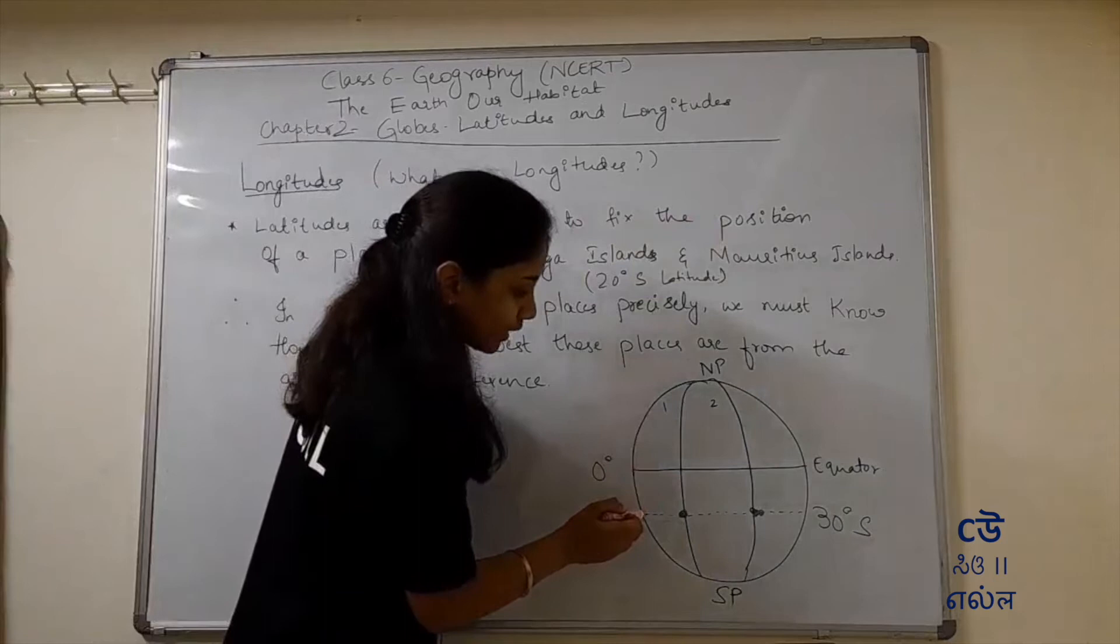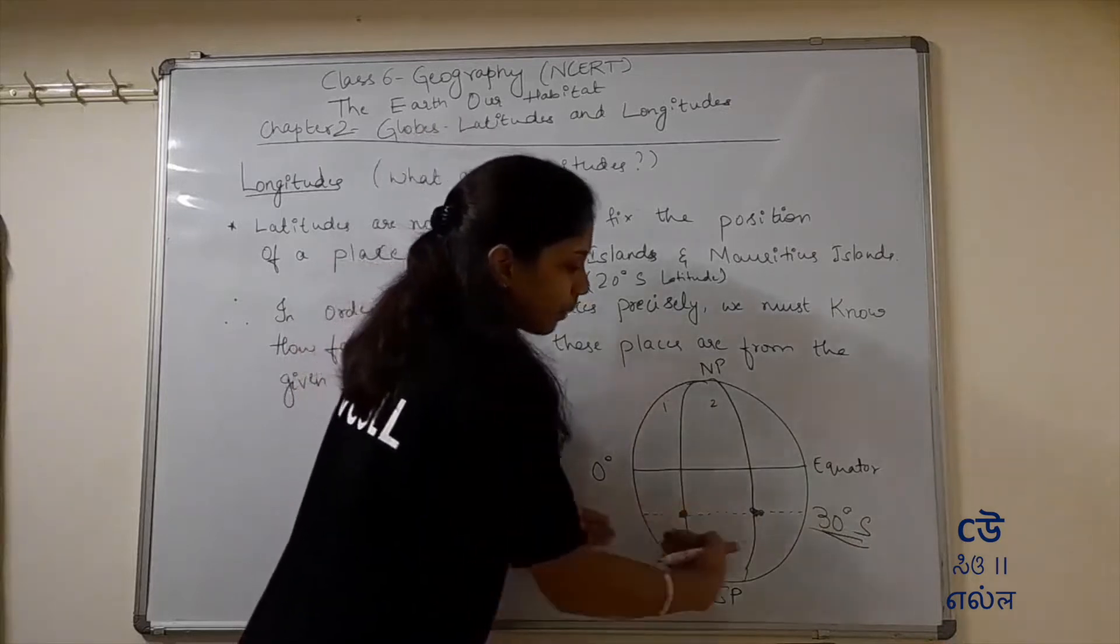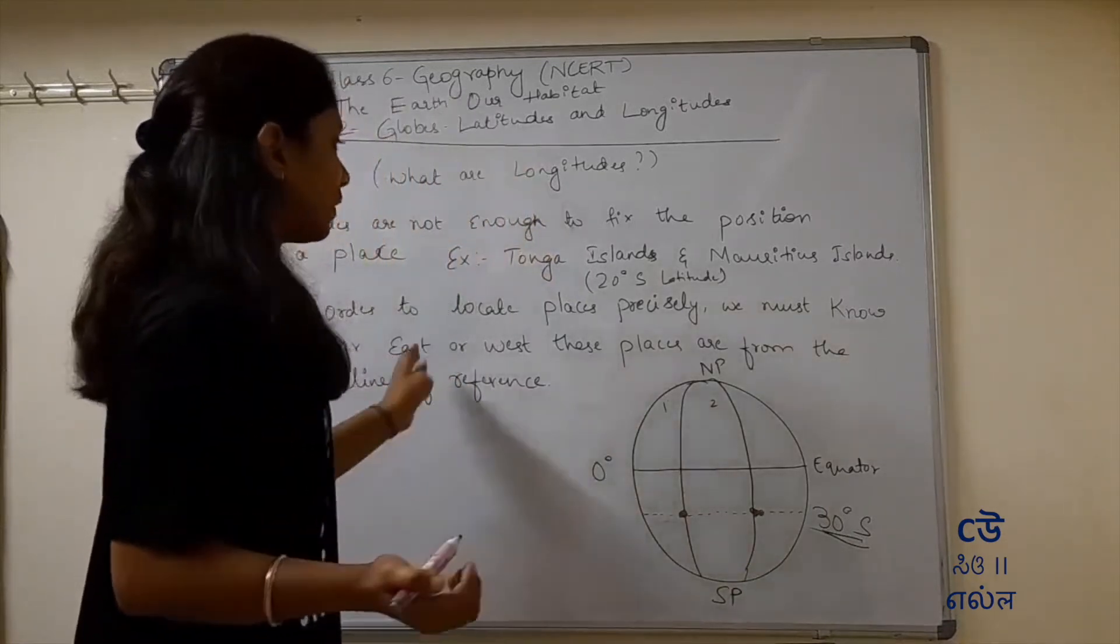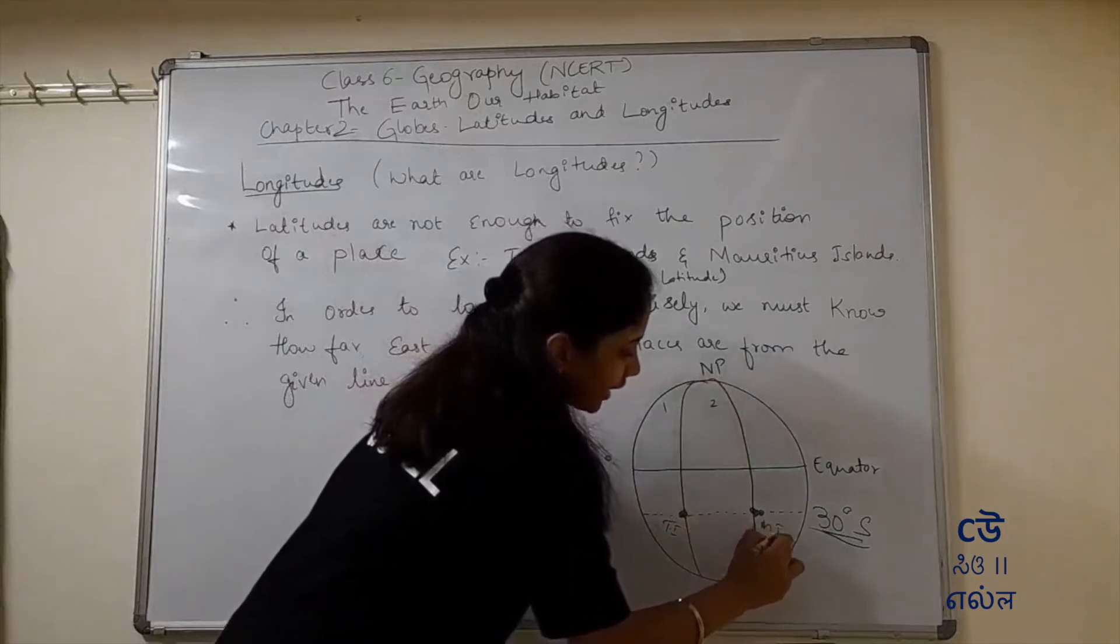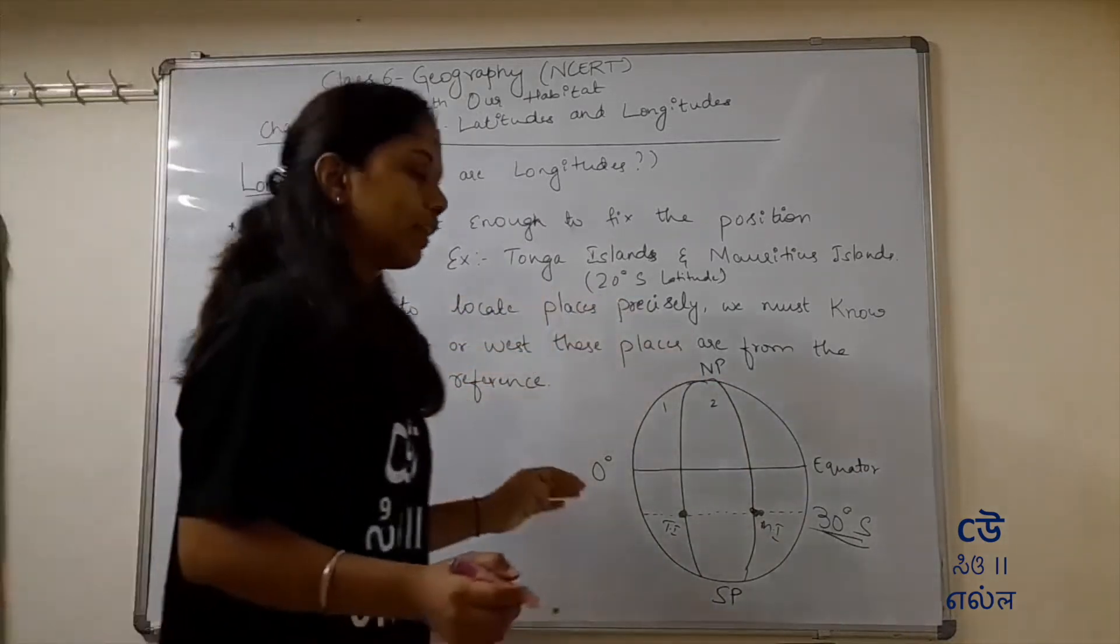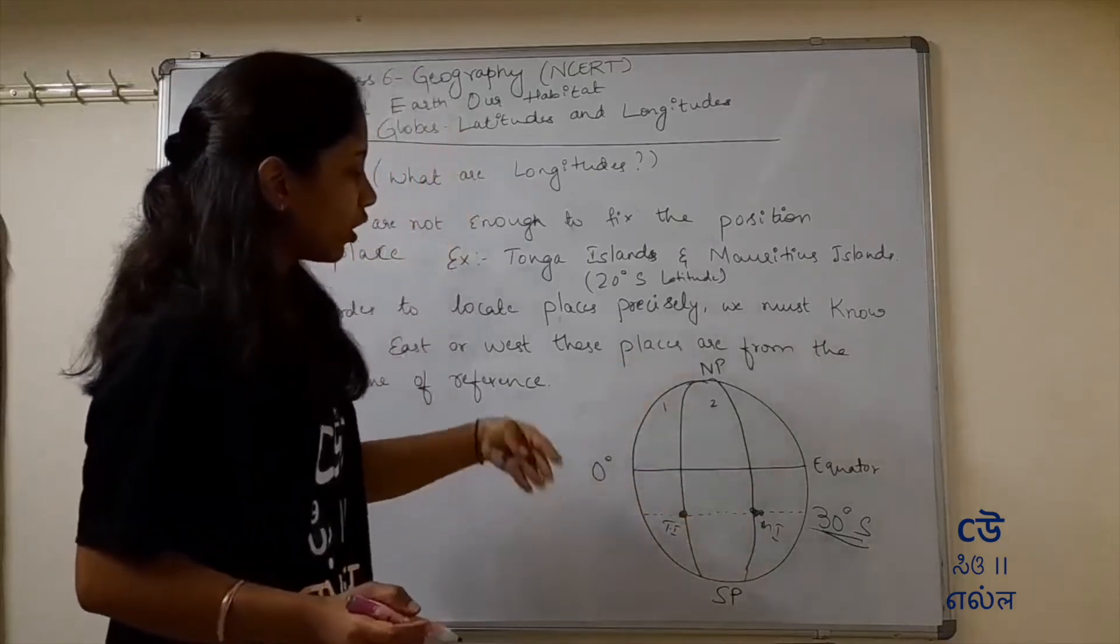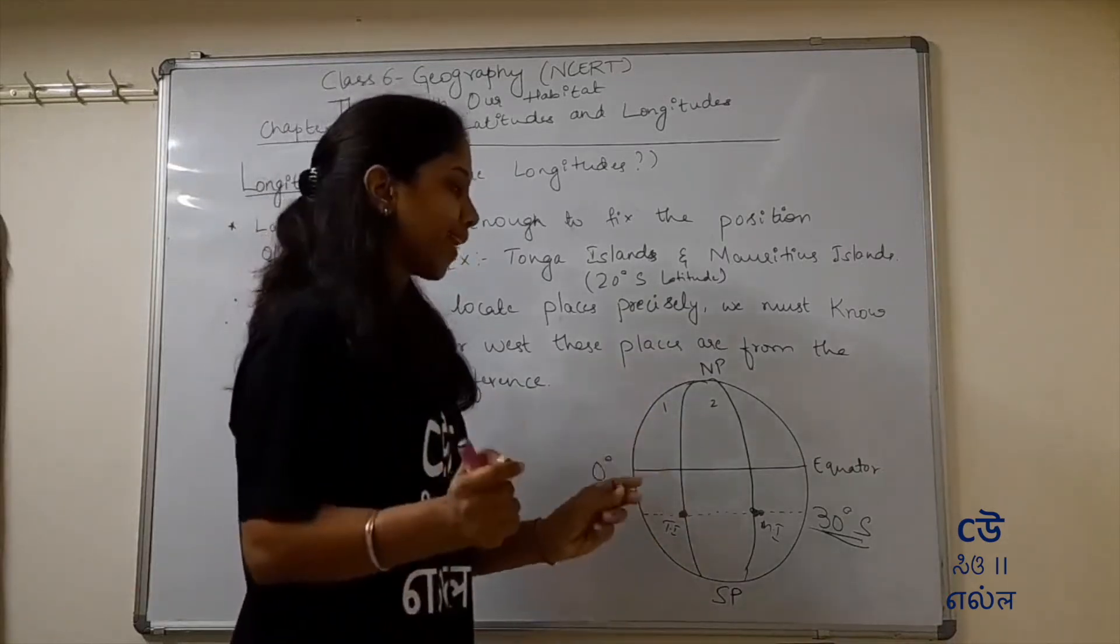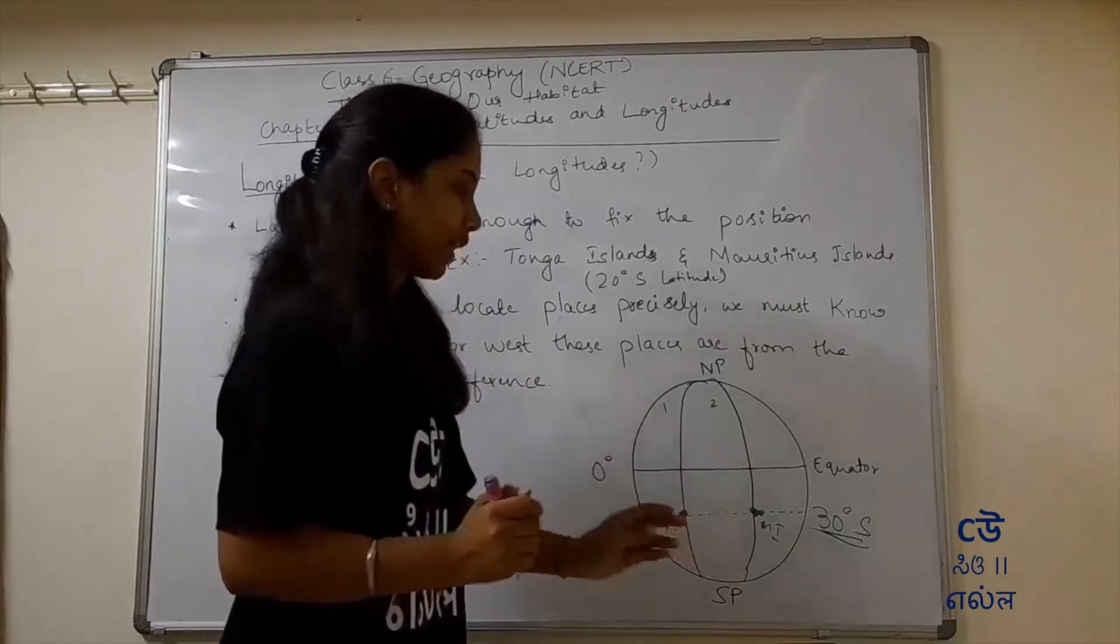Because suppose we give latitudes, in case latitude is given, many places can be there. One place could be Tonga Islands, another could be Mauritius Highland. We can't be precise about the location. So friends, if a friend says I'm at Tonga Islands or Mauritius Highland at 30 degree south, we need more details. That's why longitudes help.